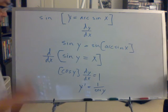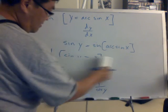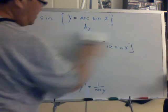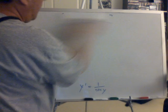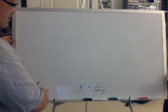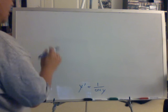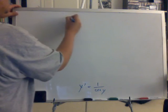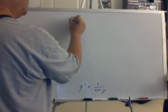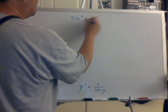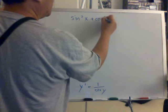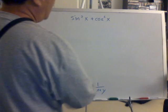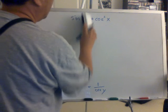So how do you find 1 over cosine of y? Well, there's two ways of doing it. One way is the trig identity, sine squared of x plus cosine squared of x. Oh sorry, it should be cosine of y.